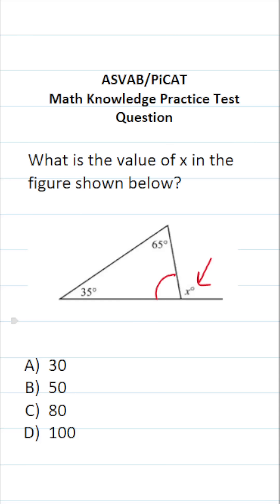The triangle sum theorem says the three angles in a triangle add up to 180 degrees. In other words, angle A plus angle B plus angle C equals 180 degrees.